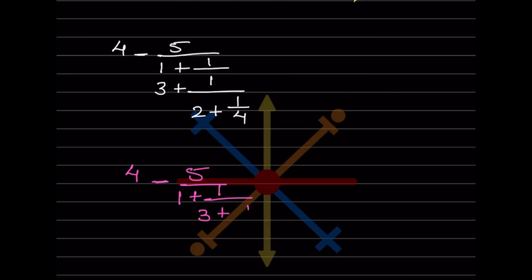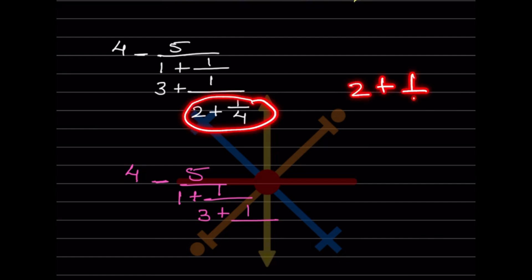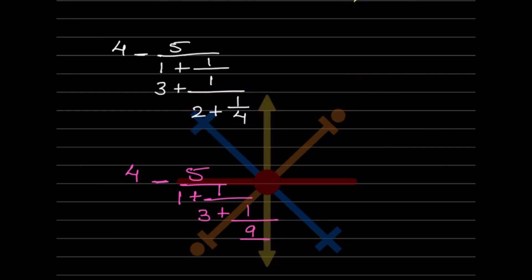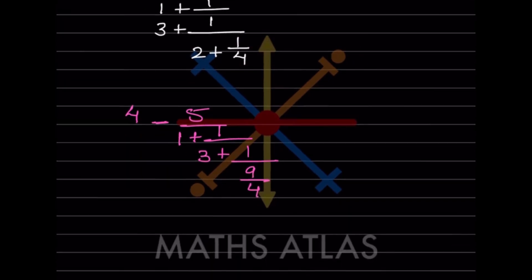First, we write 1 divided by... now see this part: if we write 2 plus 1/4, we take the LCM which is 4, giving us 8 plus 1 = 9, so this becomes 9/4. We write 9/4 here.